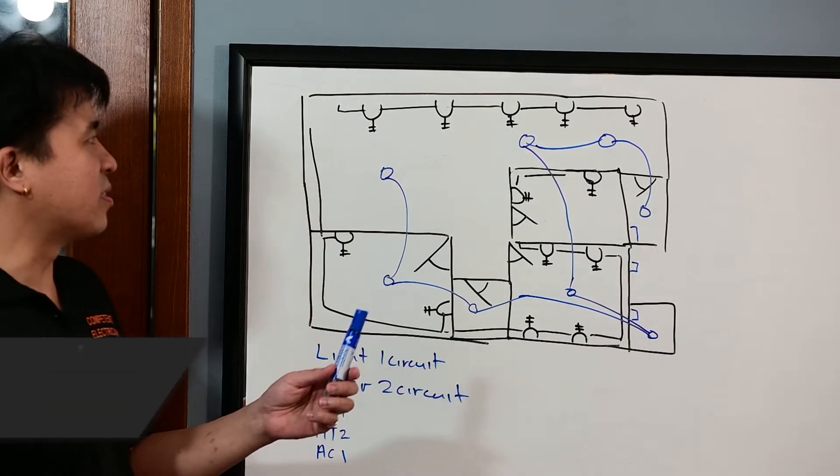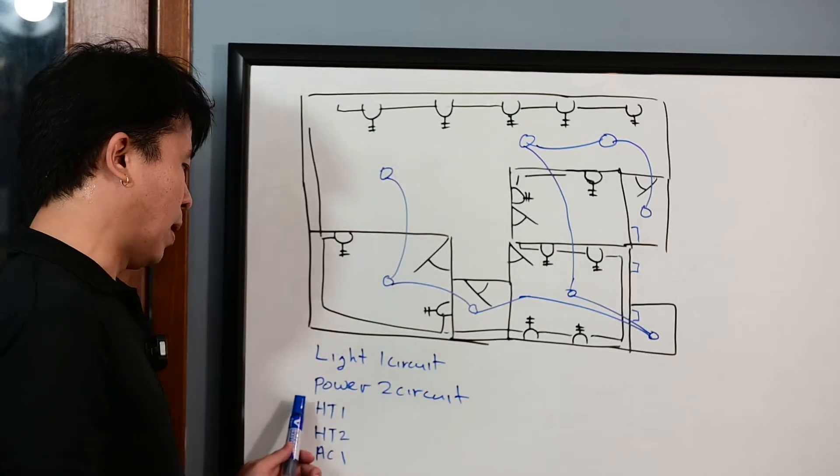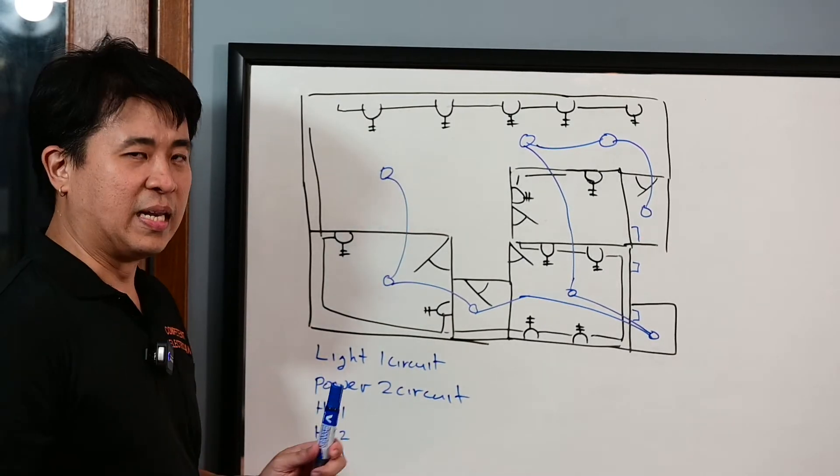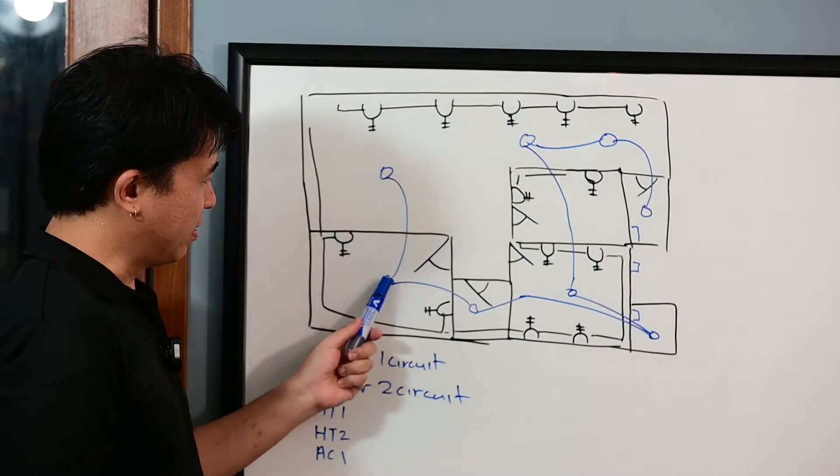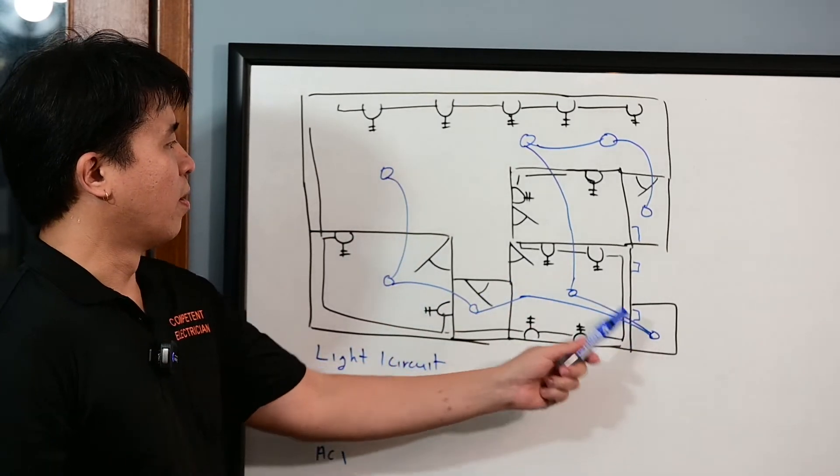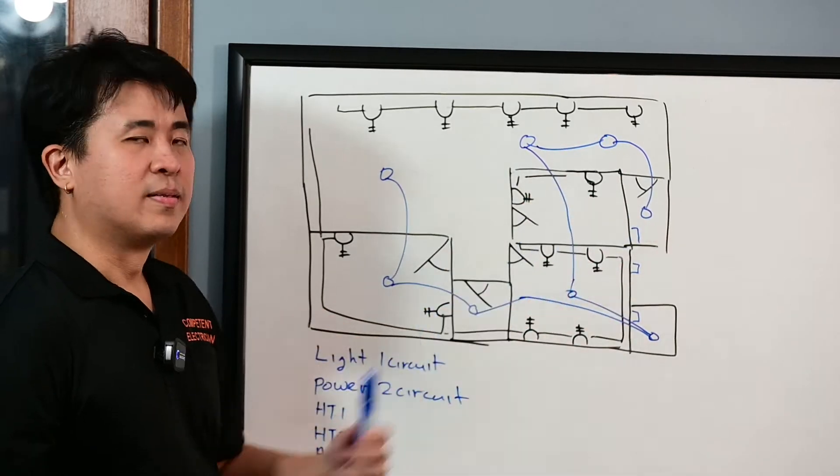There is some basic package that only uses a few power circuits and also one lighting circuit for the entire house. For example, this particular unit has the lighting points all throughout one lighting circuit.